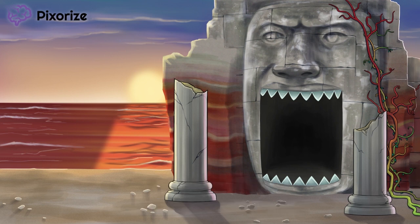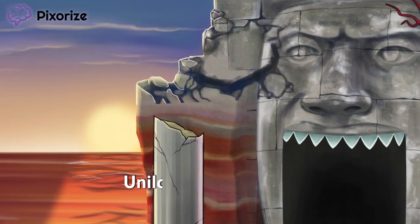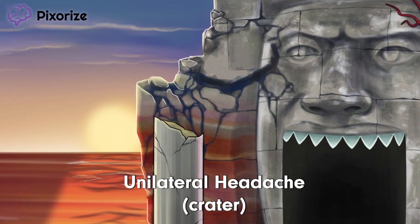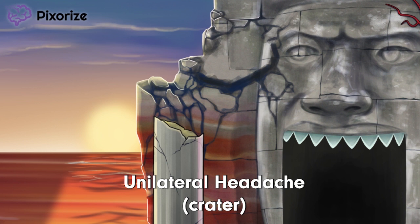Originally there were vines on both sides of the head, but now there's just a big crater on one side — something must have hit this giant head. This large crater reminds me of the unilateral headache that is seen in the temporal region. This location makes sense since the pain is caused by temporal artery inflammation. Just picture this crater on one side of the head, and you'll remember that pain usually affects only one side.